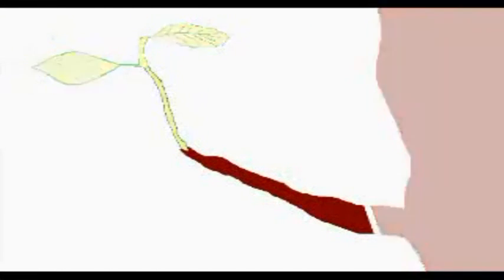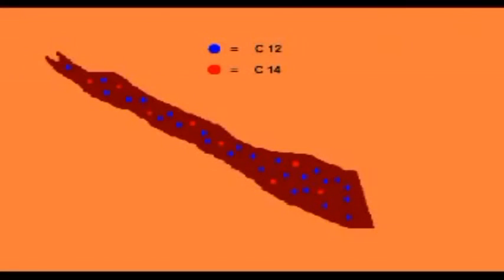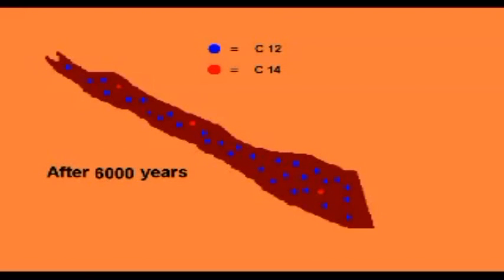The ratio of these two isotopes in animals and plants is roughly the same as the ratio in the atmosphere around them. But when the animal or plant dies, C-14 decays over time and reverts back to nitrogen. So compared to C-12, which doesn't change, the amount of C-14 falls at a constant measurable rate. By measuring this ratio inside the dead animal or plant, scientists can find out when it died.